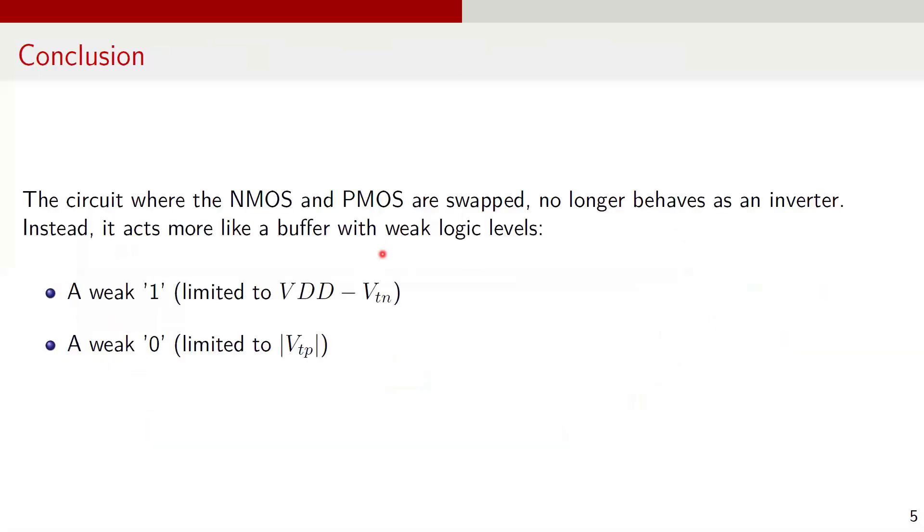To summarize, in this swapped configuration, the circuit no longer functions as a standard CMOS inverter. Instead, it behaves like a non-ideal buffer with degraded logic levels. The logic levels at the output are weak logic 1 limited to VDD minus VTN and a weak logic 0 limited to absolute value of VTP. The voltage range in this case is from absolute value of VTP to VDD minus VTN.